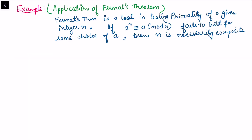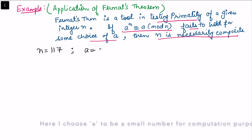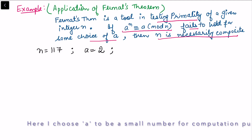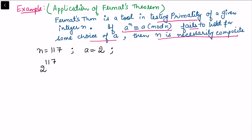In the second example, I'll explain an application of Fermat's theorem as a primality test. If a^n ≡ a (mod n) fails to hold for some choice of a, then n is necessarily composite. For example, take n = 117 and a = 2. We want to compute 2^117 mod 117. Using the division algorithm, write 117 = 7 × 16 + 5, so 2^117 = (2^7)^16 × 2^5.